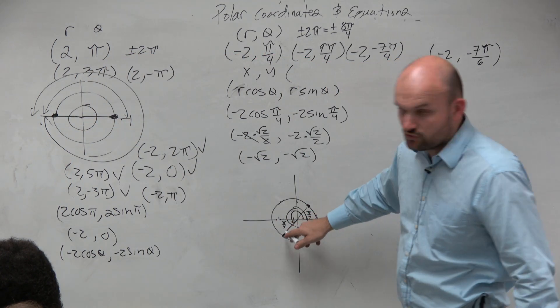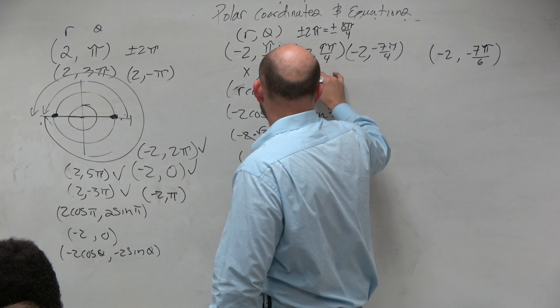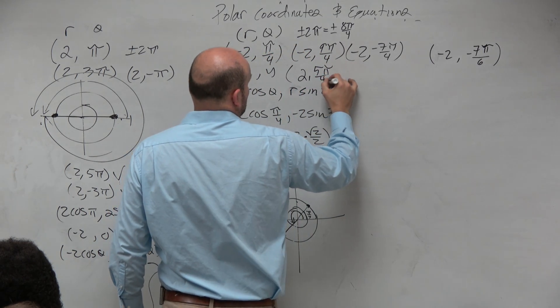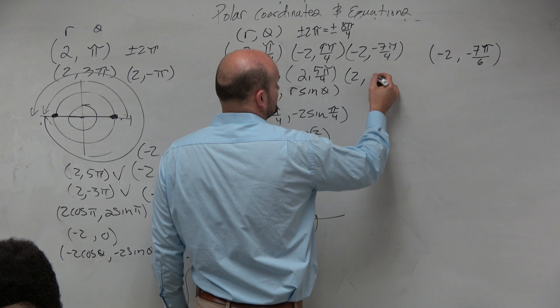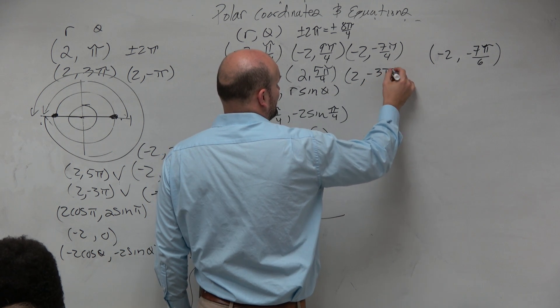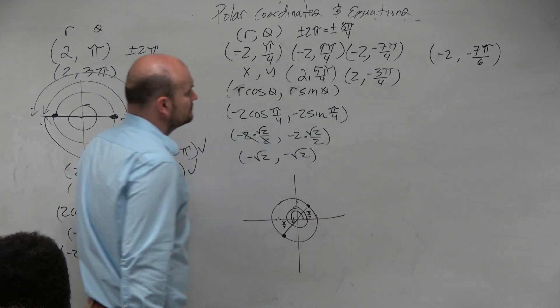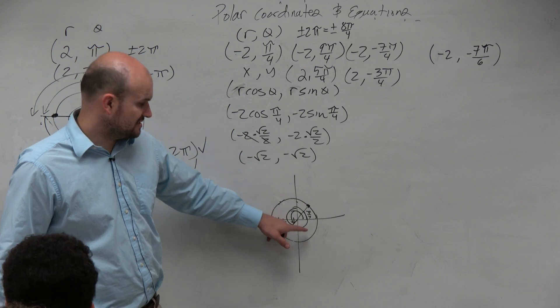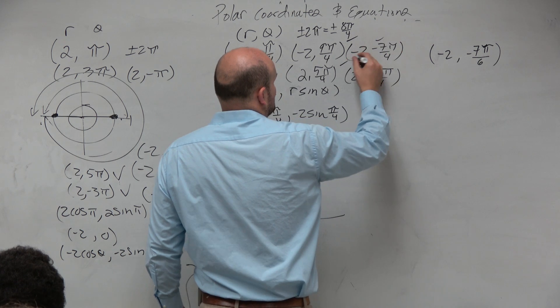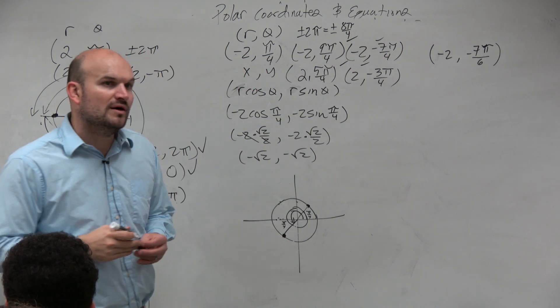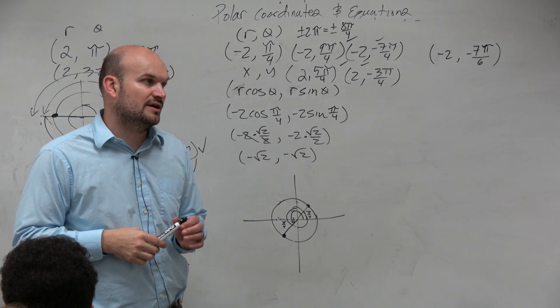So could I just quickly find that by saying 2 comma 5 pi over 4? Or could I do the negative 2 comma negative 3 pi over 4? Because it's pi away from there. And there you go, guys. There's four answers. And then you guys would probably have one that does not work. And you'd have to figure out which one doesn't work.